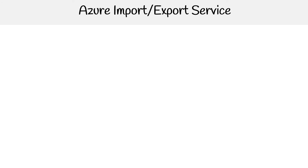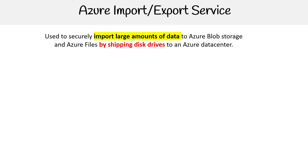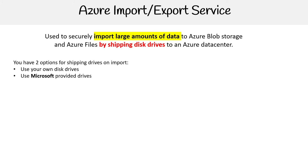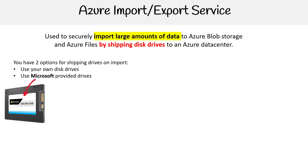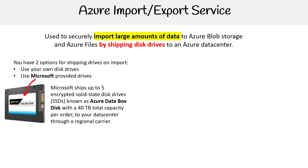Let's take a look at the Azure Import Export service. This is used for moving large amounts of data to Azure Blob Storage and Azure Files by shipping disk drives directly to the Azure Data Center. You have two options: you can use your own disk drives, or you can use the Microsoft-provided drives. They'll send up to five solid state drives to you, and they call them the Azure Data Box Disks.